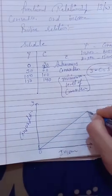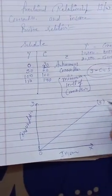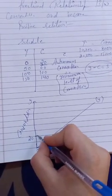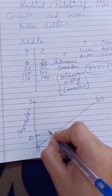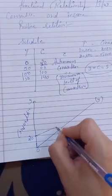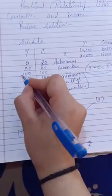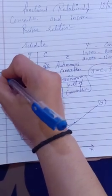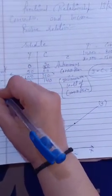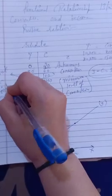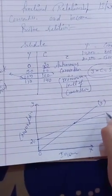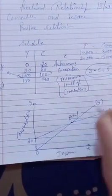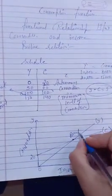In the diagram, you can see that Y (income) starts from 0, but C (consumption) starts from 20 — not from 0 — because of autonomous consumption. Initially, C is greater than Y. Then at one specific point, C and Y become equal. The point where Y and C are equal is called the Break-Even Point.